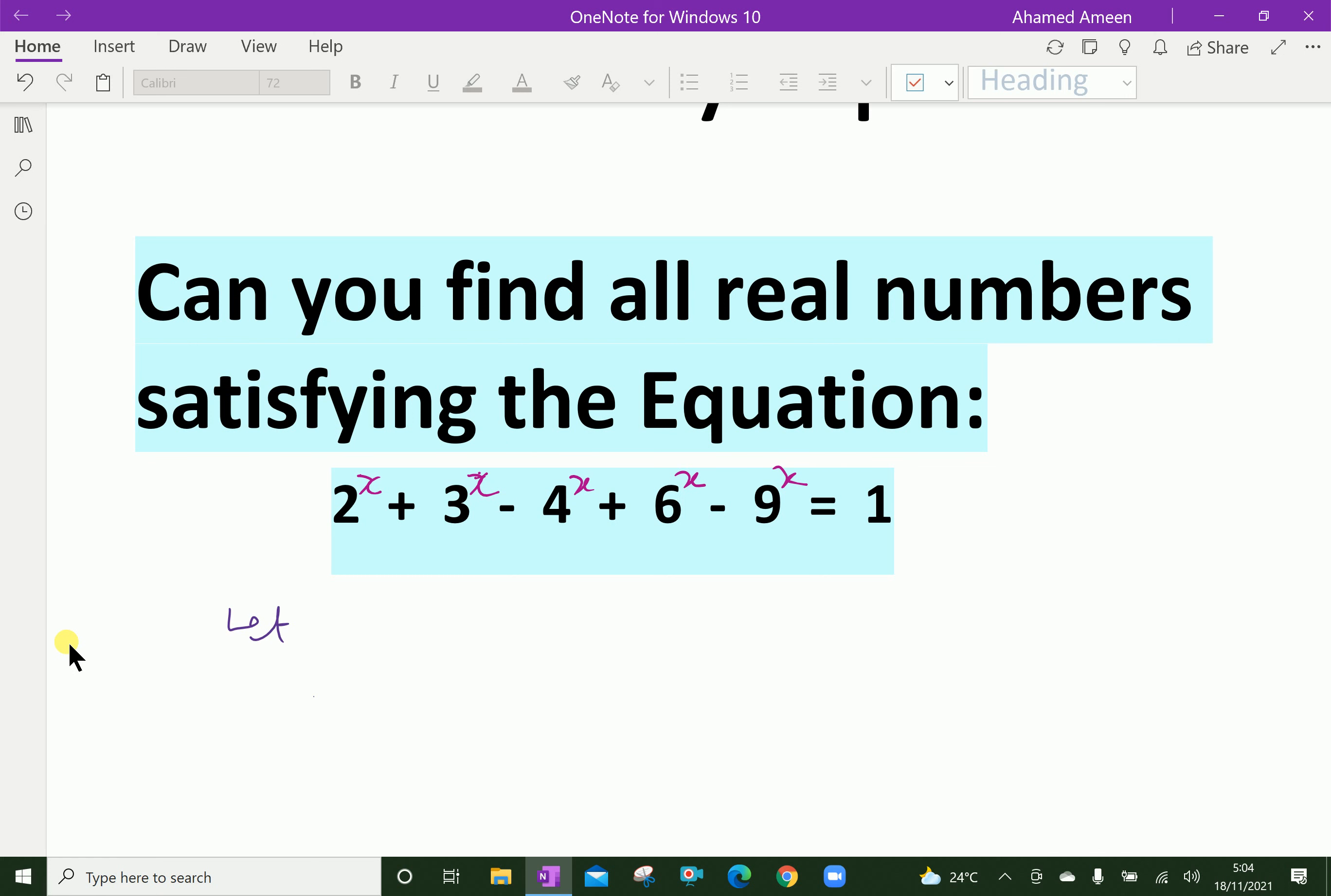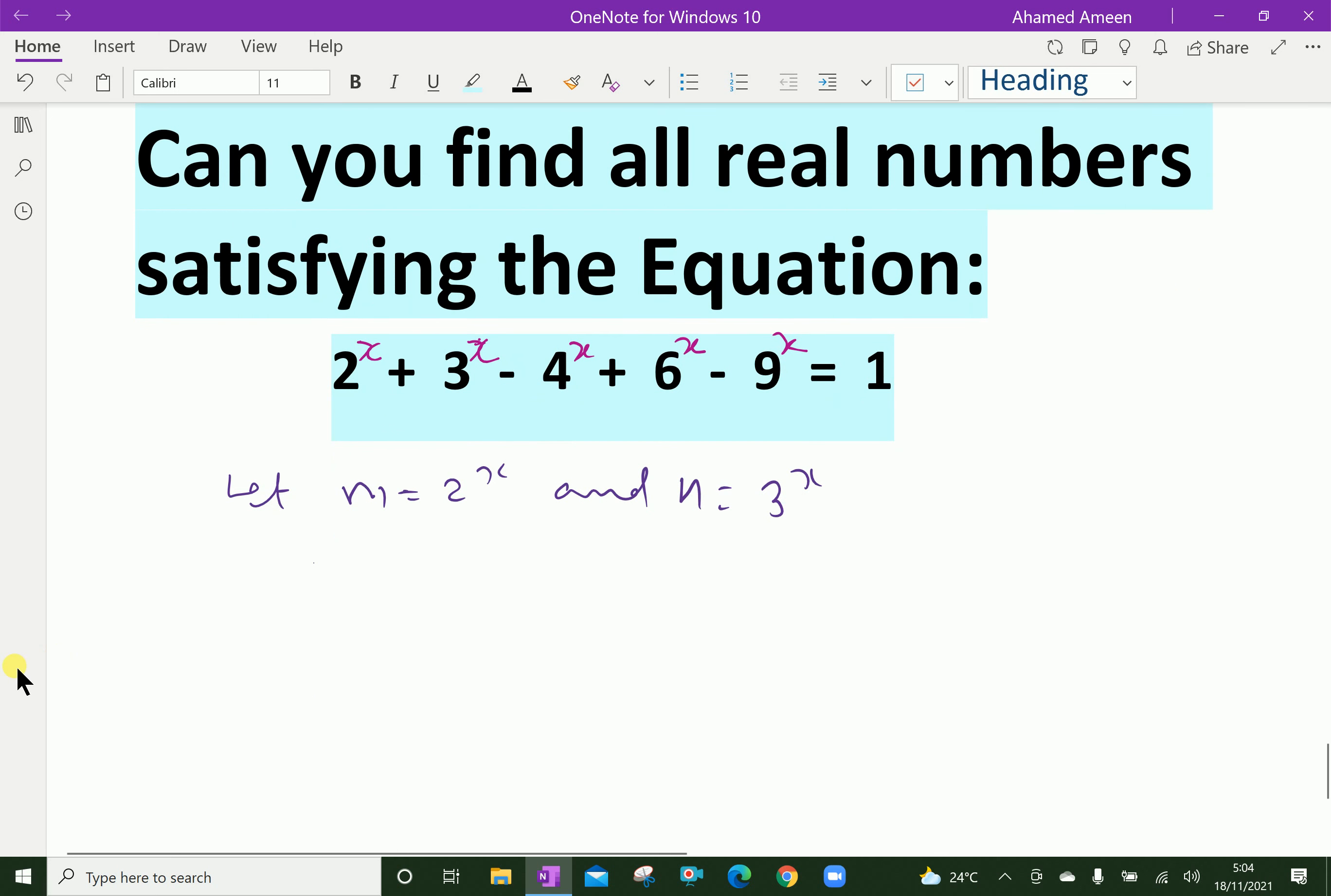Let m = 2^x and n = 3^x. Regarding this, we can write 2^x as m, plus 3^x is n, and 4^x can be written as 2 squared to the power x, that is m squared.